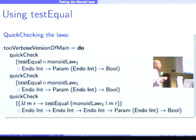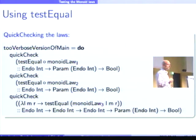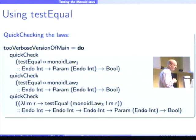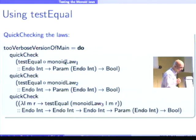Okay, so now I have the machinery to test Endo values, and this is what I have to write. I have a main function in which I test the three laws, but they're getting quite big to break the lines here. So, to test the monoid law one, I apply TestEqual after that, and then I have to supply the type. And especially for the third law here, it's getting pretty long.